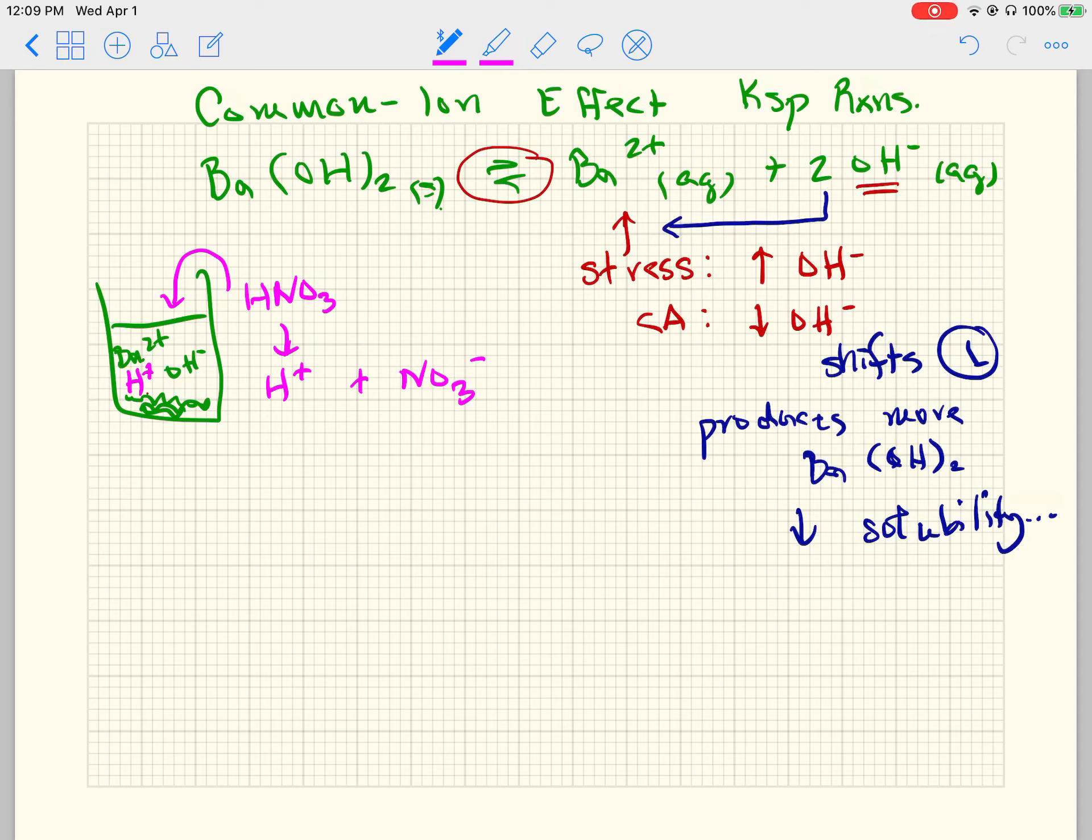But I do have now H+ floating around, and it's looking for a base, a part of a base to react with, and there's a hydroxide. And so as a result, that H+ is going to react with my OH- to produce water. And so as a result, what happens is we've also created a stress. And the stress in this case is we are decreasing the hydroxide, and Le Chatelier says that we will have a counteraction and increase the hydroxide in order to go back to equilibrium. And as a result,